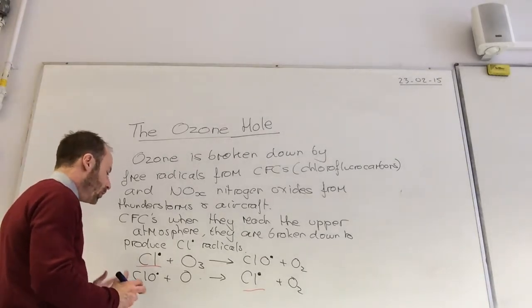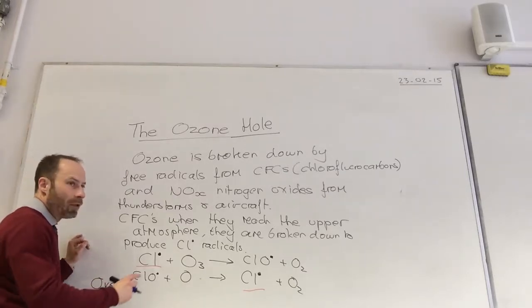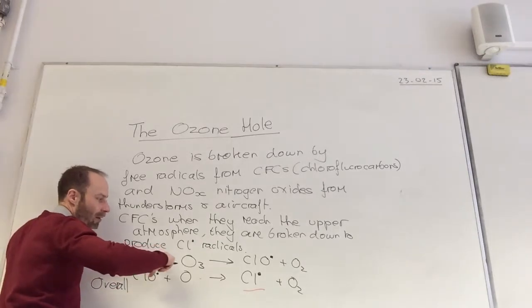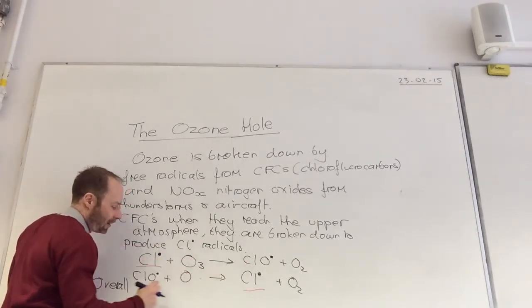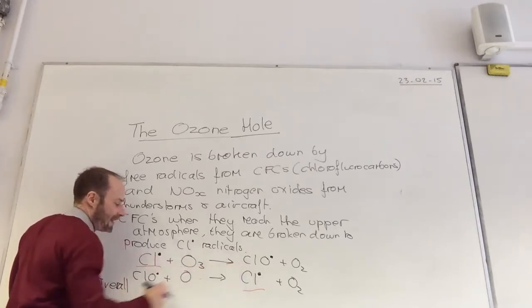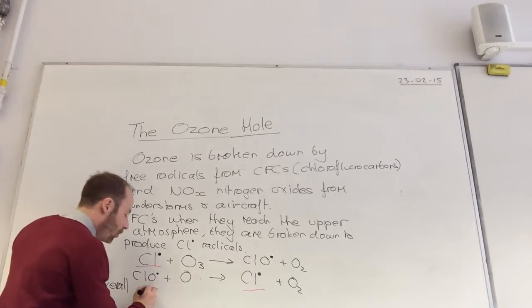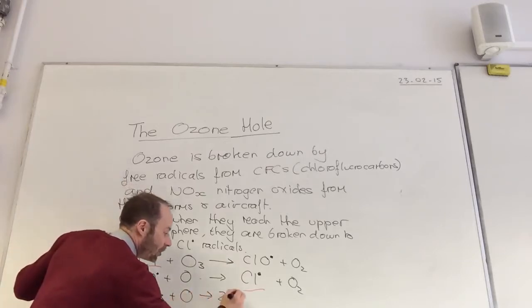So overall, what's happening? If I write the overall equation. Overall, can you see those guys cancel? Because if I use it here and get there. These always cancel because I create it here and use it. So overall, O3 is meeting O to give me 2 O2.